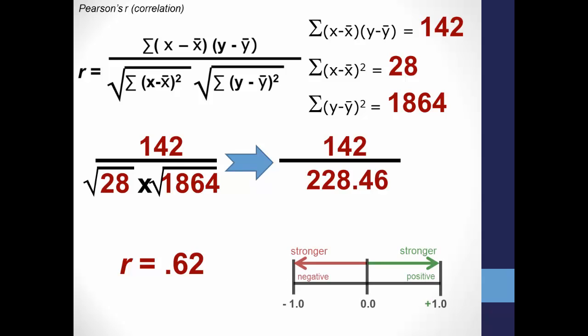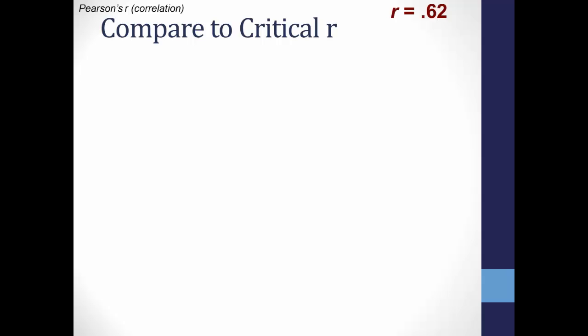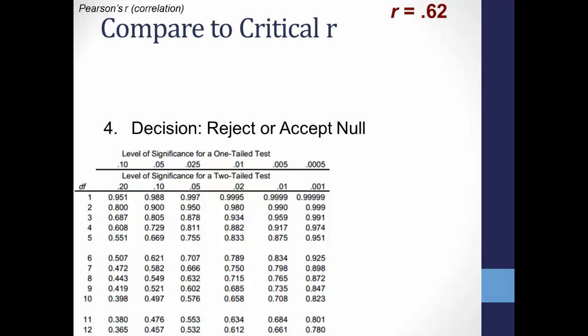Since 0.62 is close to positive 1.0, it appears to be a very strong positive correlation. It appears, then, that the number of hours spent studying for an exam is positively correlated with the exam score. But now we have to take the next step to compare our calculated r of 0.62 to determine whether we should accept or reject the null hypothesis, and for that we'll need our critical value table for Pearson's r.